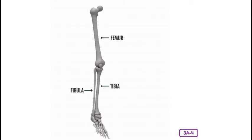Leg bones and arm bones are a lot alike, but leg bones are thicker and longer than arm bones. In fact, the longest, heaviest, and strongest bone in your entire body is in your leg. It's the thigh bone or femur. Your femur is connected to your pelvis and extends all the way down to your knee. If you look at the picture, you will see two bones in the lower part of the leg. The larger one in the front is called the tibia or shin bone. The thinner bone behind it is called the fibula. Both the tibia and the fibula connect the knee to the ankle.